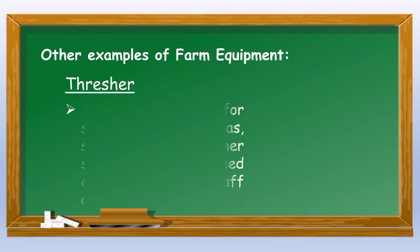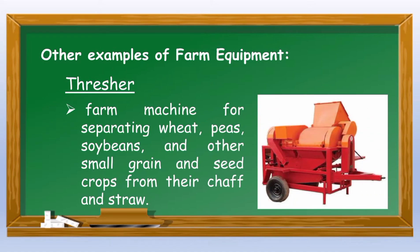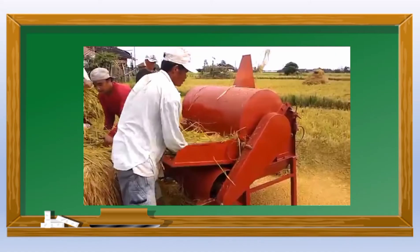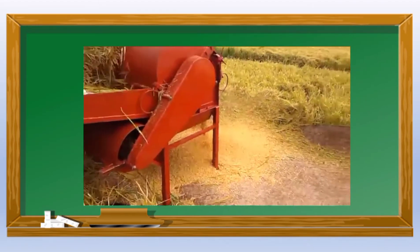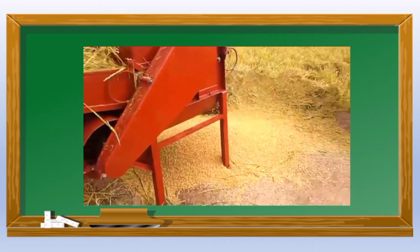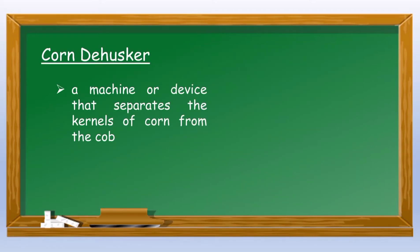Other examples of farm equipment include the Thresher, a farm machine for separating wheat, peas, soybeans, and other small grain and seed crops from their chaff and straw. The Corn Dehusker is a machine or device that separates the kernels of corn from the cob.